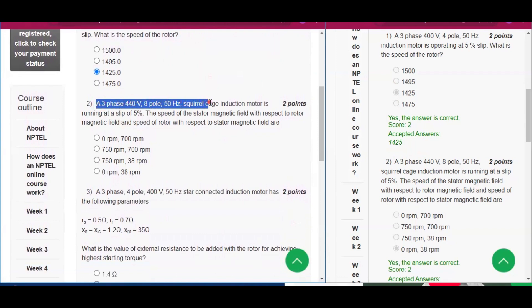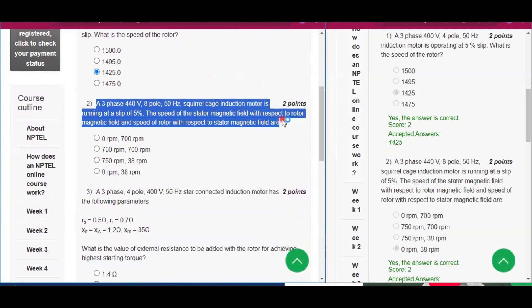Question number two: A three-phase 440 volt eight-pole 50 hertz squirrel cage induction motor is running at a slip of 5%. The speed of the stator magnetic field with respect to the rotor magnetic field and the speed of the rotor with respect to the stator magnetic fields are zero rpm and 38 rpm.